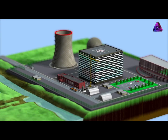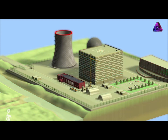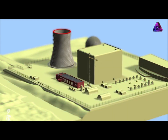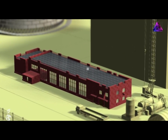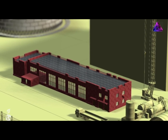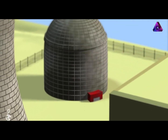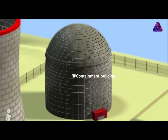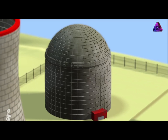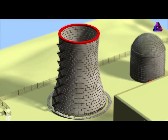Nuclear power plants are thermal power stations which generate electrical energy from heat. They consist of numerous buildings and facilities, the most important of which are the turbine building, which houses turbines and the generator for electrical power generation; the containment building, made of meter-thick reinforced concrete, where the nuclear reactor is housed and water is heated; and the cooling tower, which can be as tall as 200 meters, where hot water is cooled.